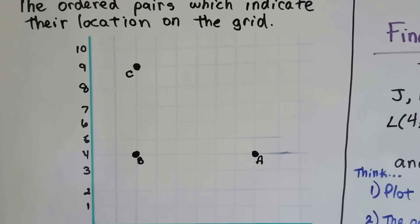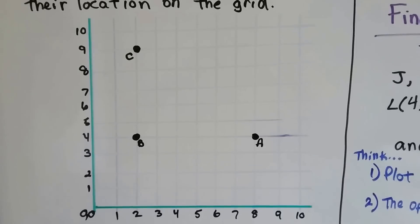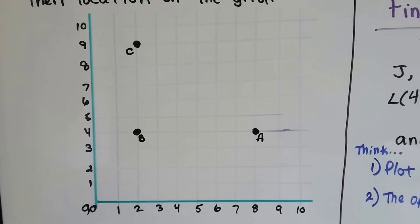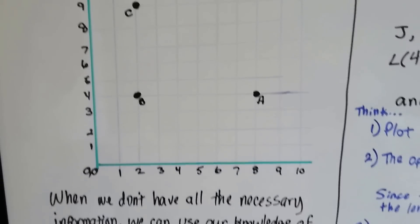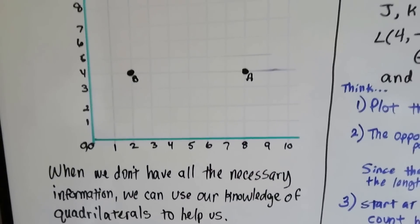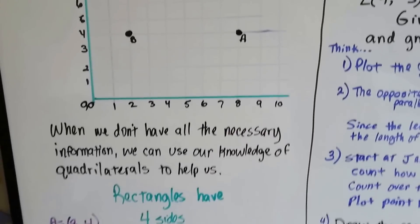If we looked at these four points and we knew that we were trying to plot a rectangle, would you be able to tell where the next point was supposed to go? Can you see it? When we don't have all the necessary information, we can use our knowledge of quadrilaterals to help us.